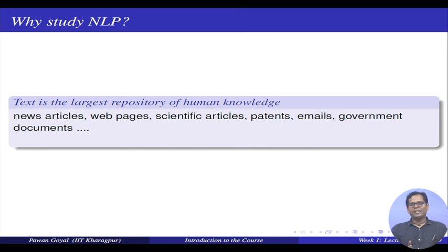A few words on why we need to study NLP. NLP is all about processing text data, and you can find an abundance of text data everywhere. Text is the largest human knowledge repository that we have. Various sources of this knowledge include Wikipedia articles, news articles, scientific articles, patents, social media — all your tweets, Facebook posts and everything is available in text format. This abundance of text data is quite unstructured, and to make use of this information and build nice applications, you need to know how to process this data — and that is where NLP comes into the picture.